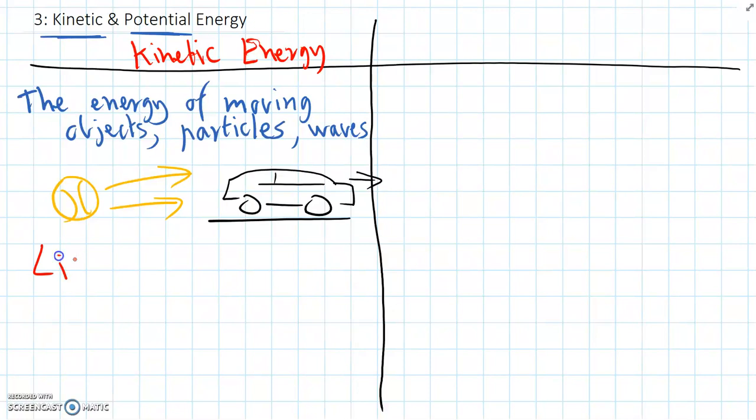But on top of that, we also have light energy. So when light energy enters our eye, it moves as a wave. So again, that involves movement. Light energy is kinetic.